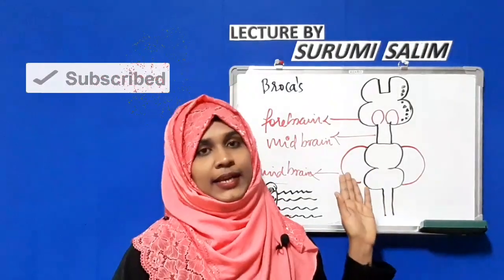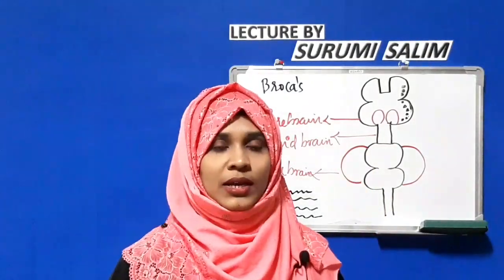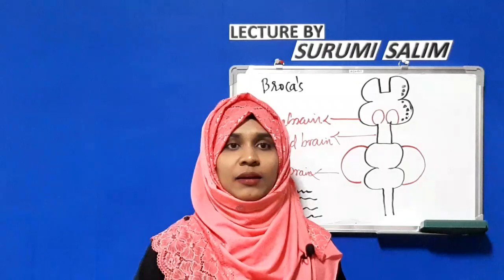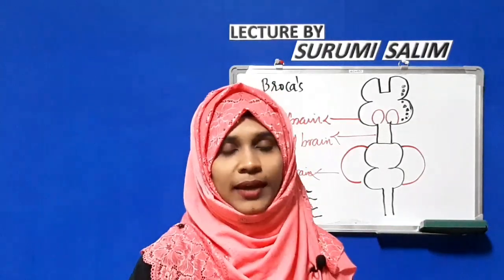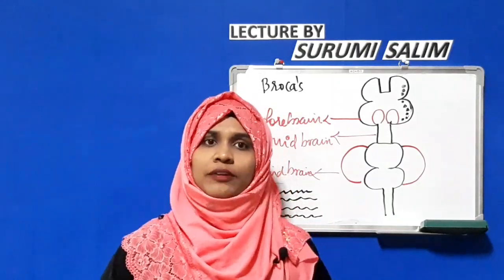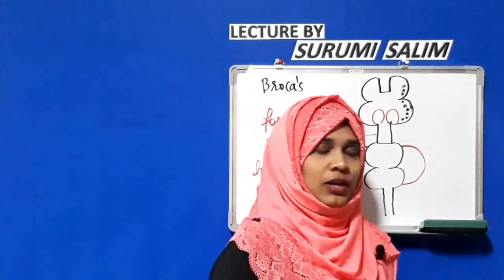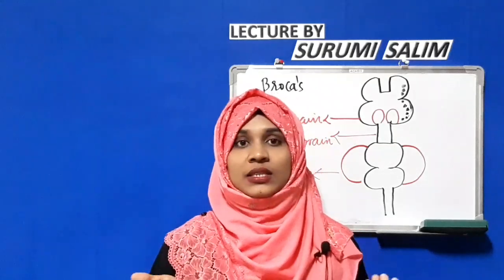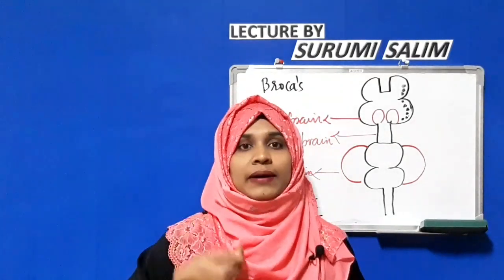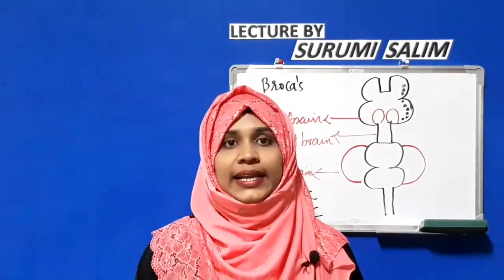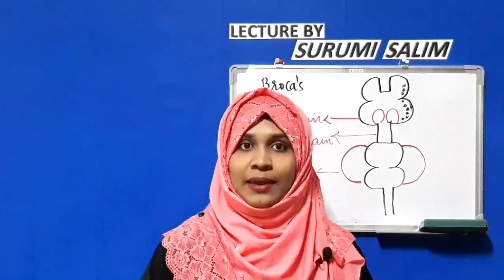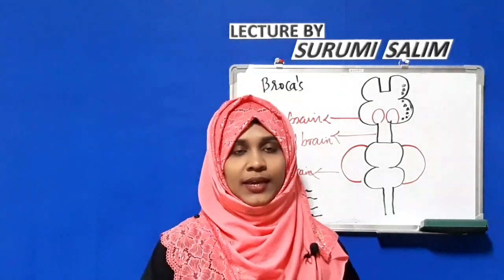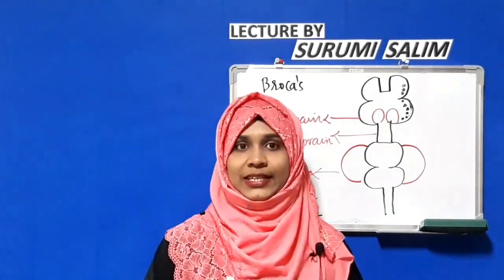Next is the parietal lobe, which sits behind the frontal lobe. The two are separated by the central sulcus. The parietal lobe is otherwise called the somatosensory area of the brain. It helps in spatial perception — the individual's relation with the external environment — and also receives impulses of touch, pressure, pain, temperature, and taste.